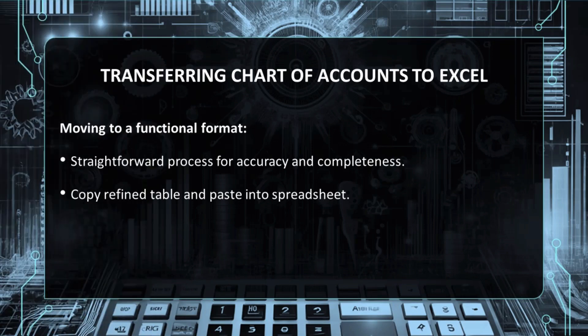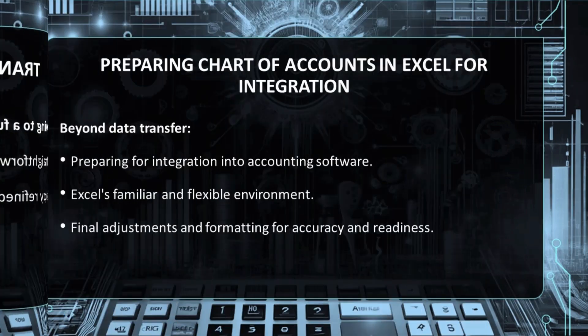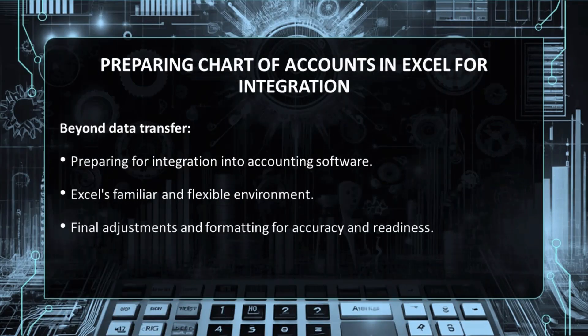Once the chart of accounts meets your standards of accuracy and completeness, the next step involves transferring this data into a more functional format — Microsoft Excel. Copy the refined table from ChatGPT and paste it into an Excel spreadsheet. This step is more than a mere data transfer; it's about preparing your chart of accounts for integration into your accounting software. Excel's familiar and flexible environment offers the perfect stage for any final adjustments and formatting, ensuring the data is accurate and in the right shape for the next phase.